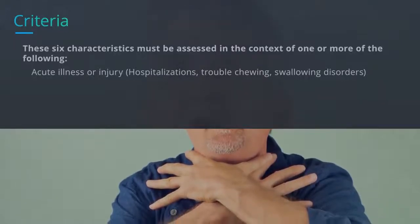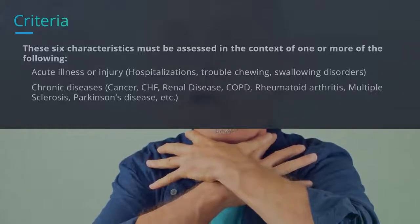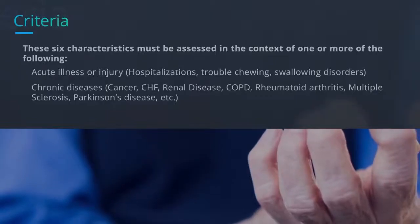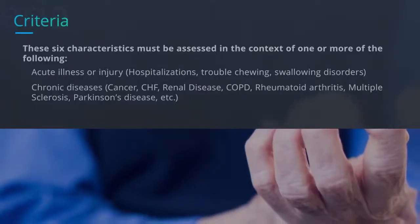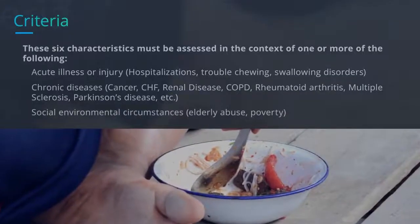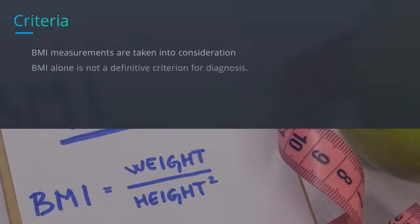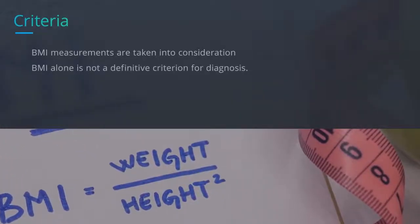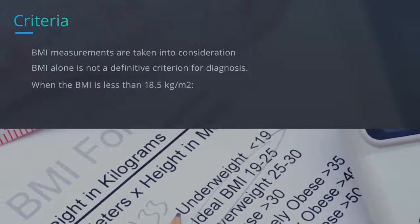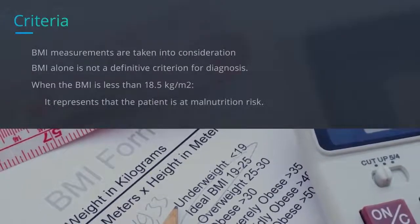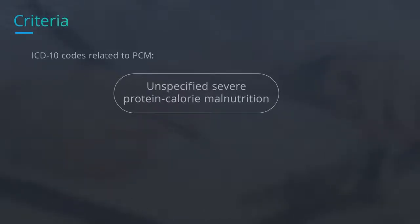Context conditions also include trouble chewing or swallowing disorders, chronic diseases such as cancer, CHF, renal disease, COPD, rheumatoid arthritis, multiple sclerosis, and Parkinson's disease, as well as social and environmental circumstances such as elderly abuse and poverty. BMI measurements are taken into consideration, but note that BMI alone is not a definitive criterion for diagnosis. When the BMI is less than 18.5 kg/m², it indicates that the patient is at malnutrition risk.